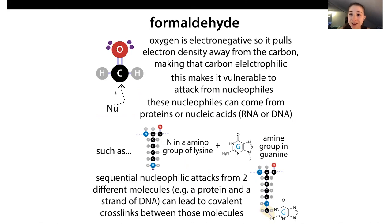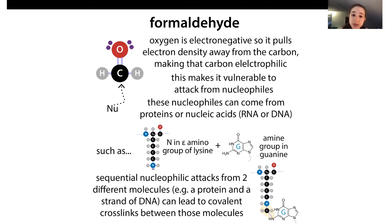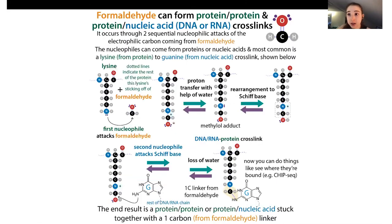If we look at formaldehyde, how is this going to do anything? It turns out you can get two subsequent attacks that lead to the molecules being linked together through a single carbon linker formed from the formaldehyde. Because you only have a single carbon as opposed to a longer linker, this potentially gives you more specific binding because the molecules have to be in closer contact for this to happen.